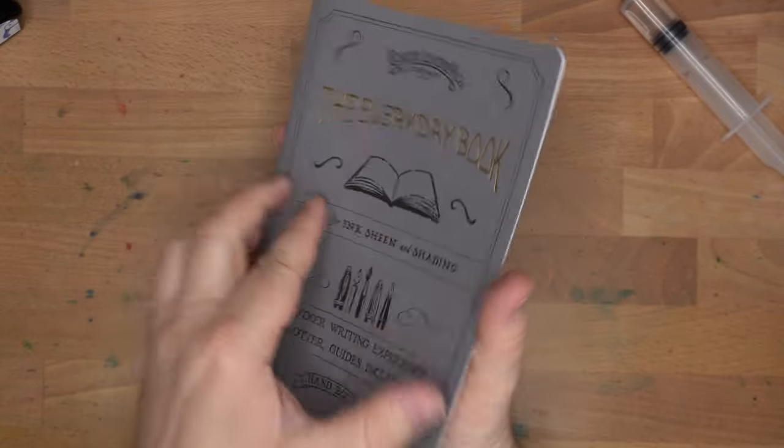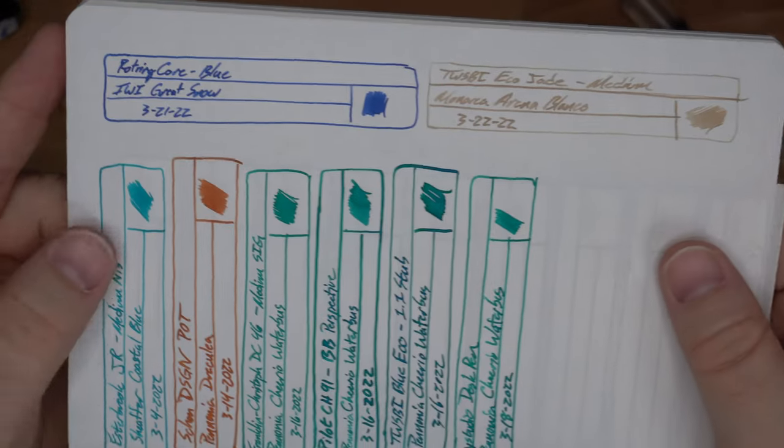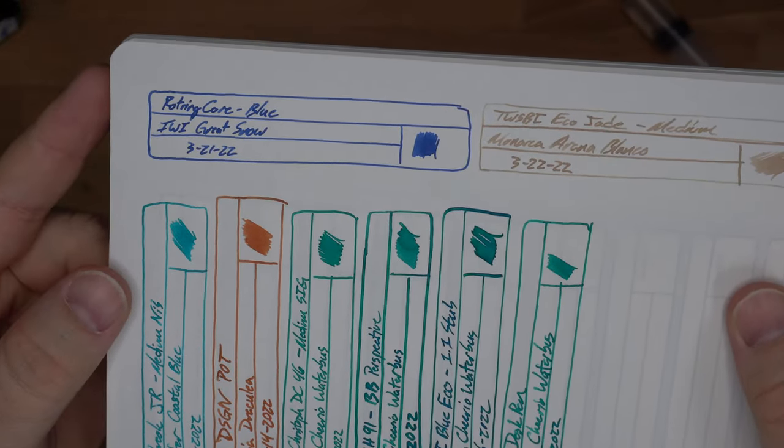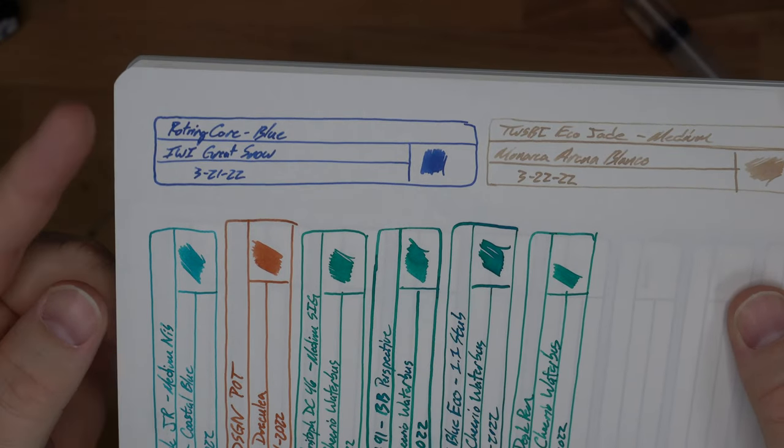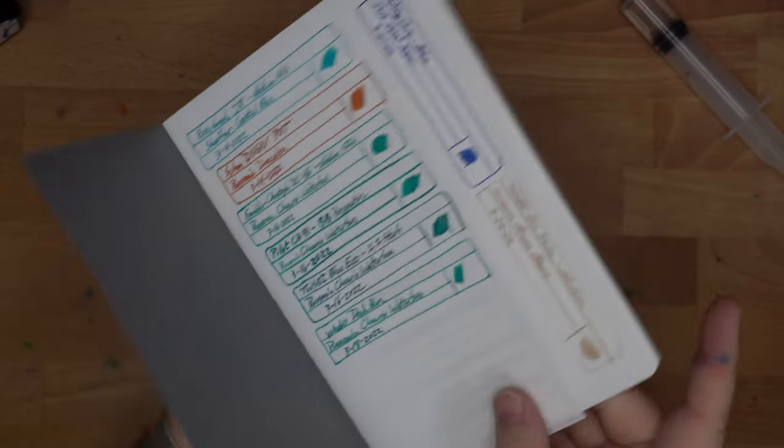But this is a Galen Everyday Book, which is also a Tomoe River paper. And there is the Great Snow from the Rotring Core, which I put in, I don't know, a week ago or so. And yeah, looks great. Works really well on there. So keep it on the good paper, you're gonna like this ink. It's a cool color.